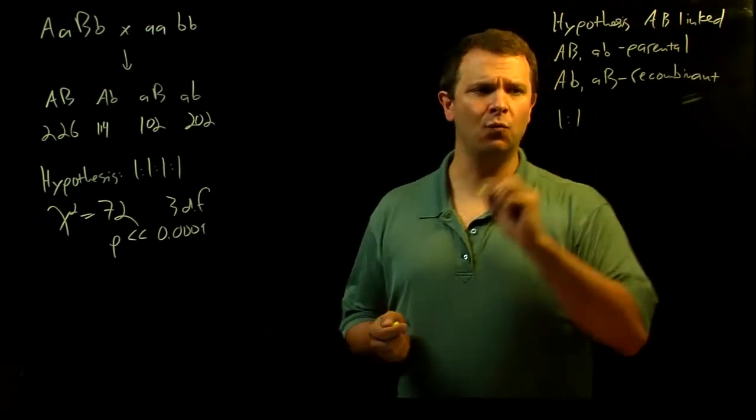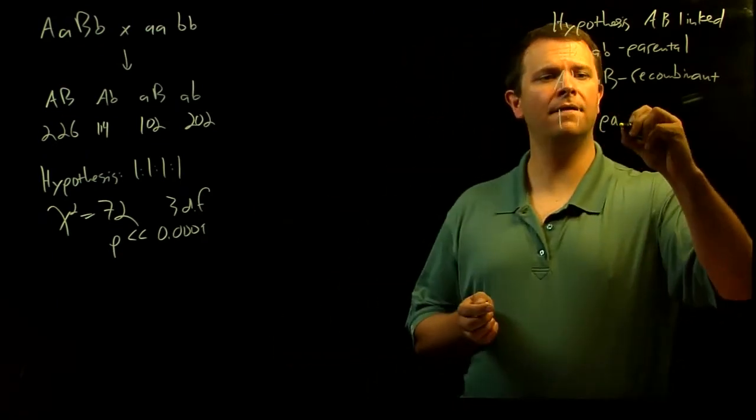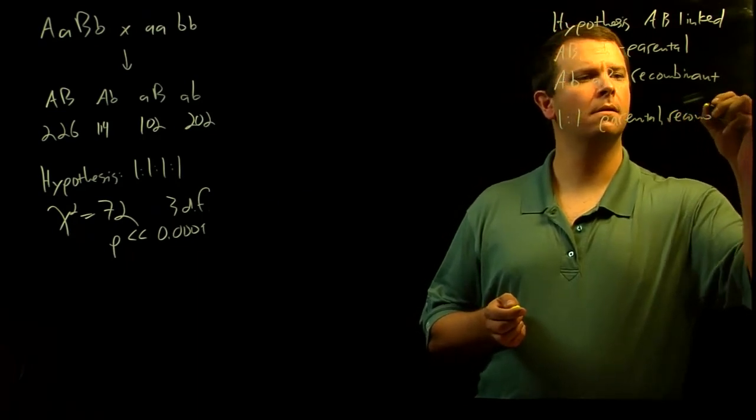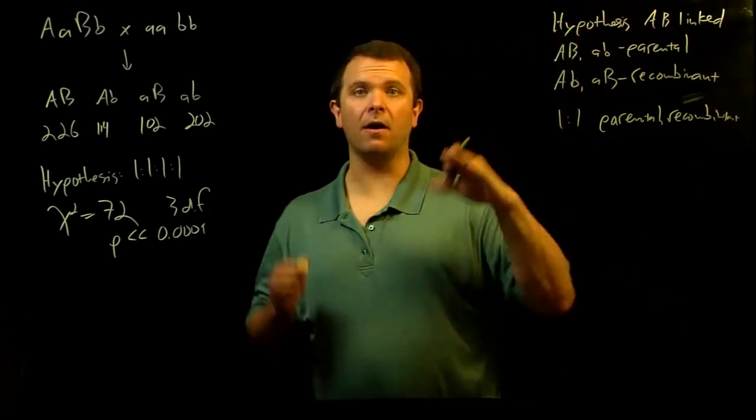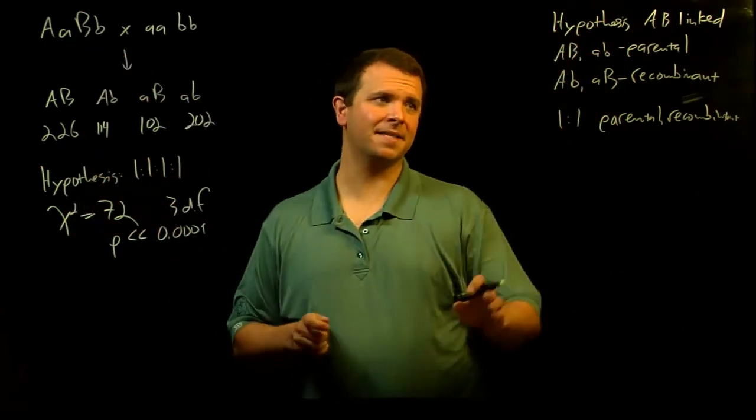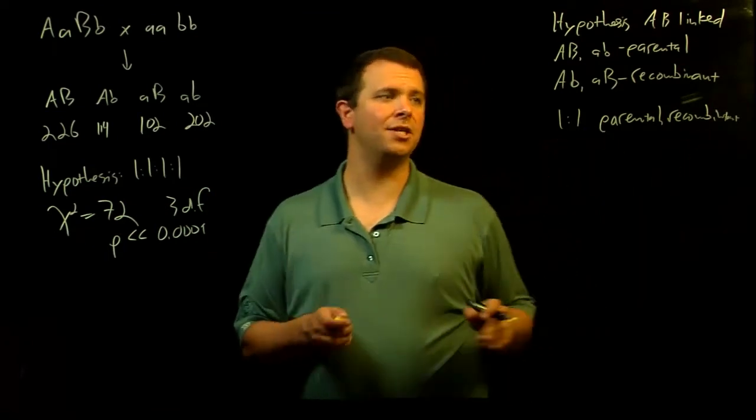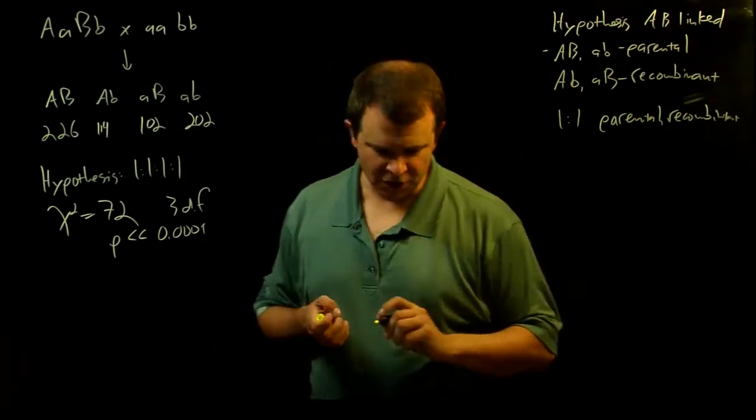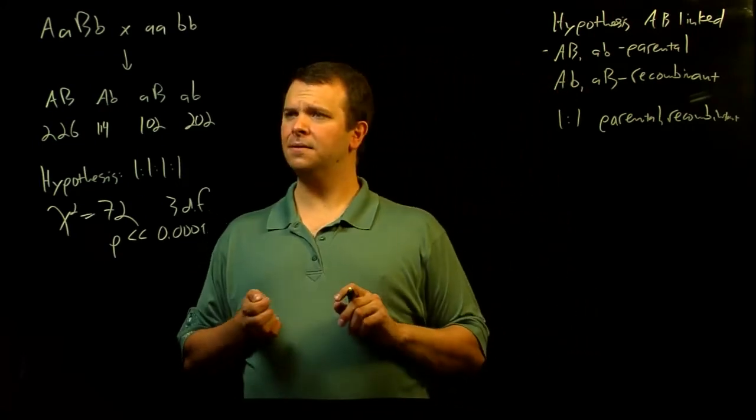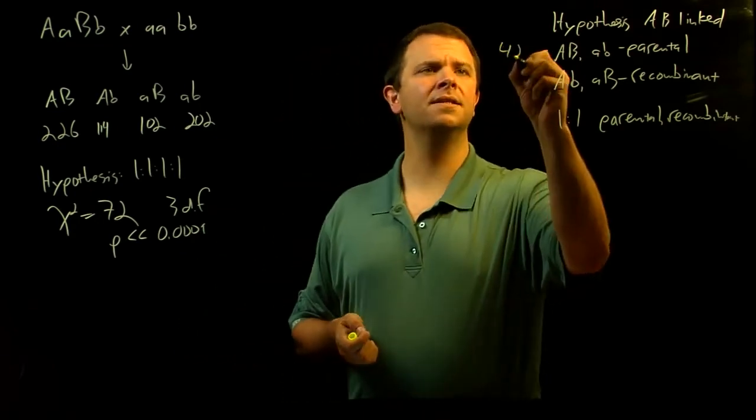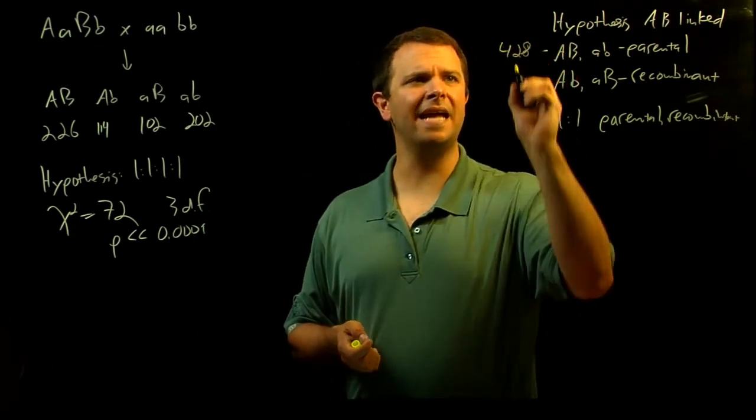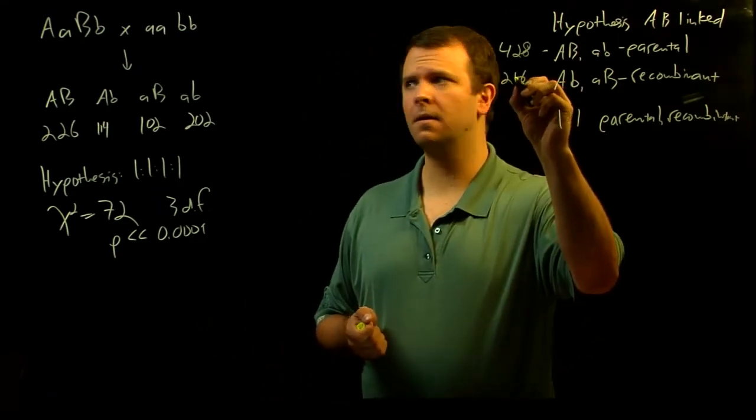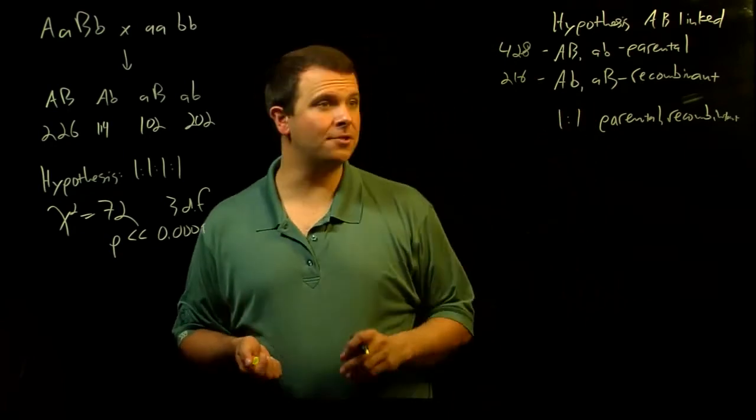And thus we expect that if this hypothesis is true, there will be a one-to-one ratio of parental and recombinants. If A and B are unlinked, still under this hypothesis, there's a one-to-one ratio of parental and recombinants. How many parental observations did we have? Well, 226 plus 202 is 428. And how many recombinant gametes did we see? 114 and 102 is 216.